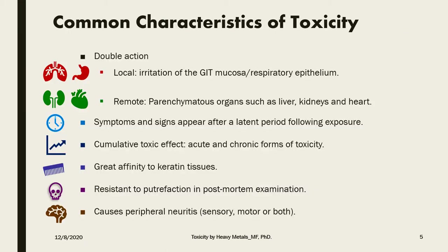There are some common characteristics of toxicity for heavy metals. First of all, they have double action. They have a local irritating action at the site of first exposure, which would be the GIT mucosa for the oral route, and irritation of the respiratory epithelium following inhalation of fumes. After absorption, they also exhibit remote action on other parenchymal organs, such as the liver, kidneys, and the heart.